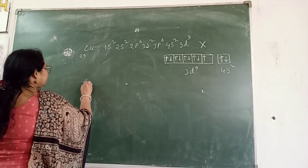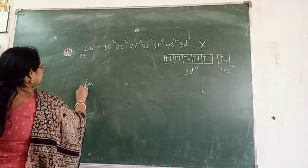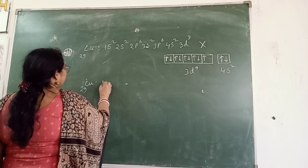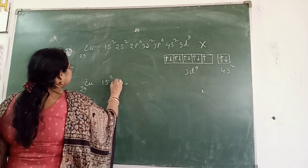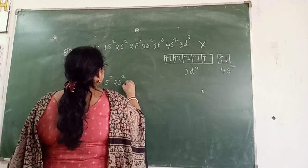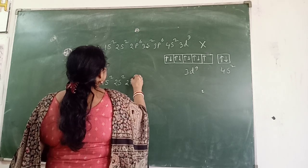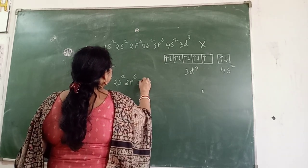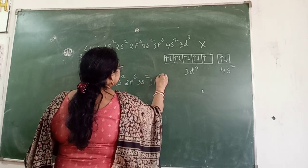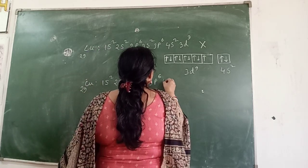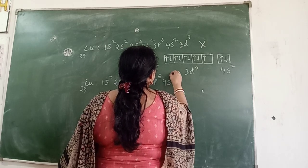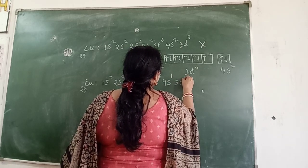So the correct electronic configuration of copper is: 1s2, 2s2, 2p6, 3s2, 3p6, 4s1, 3d10.